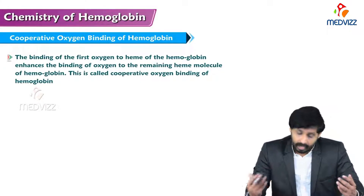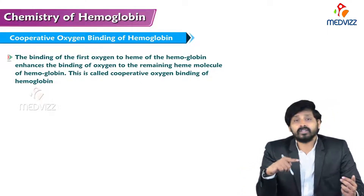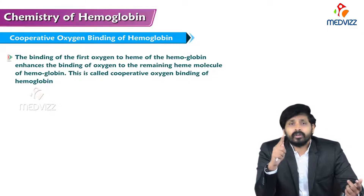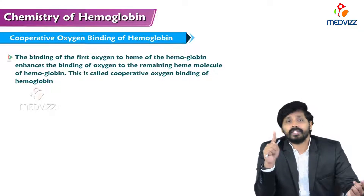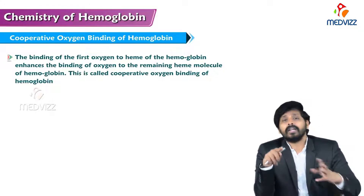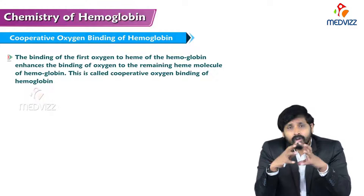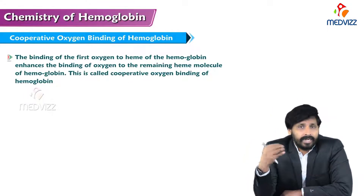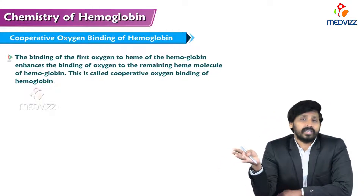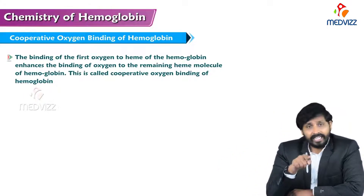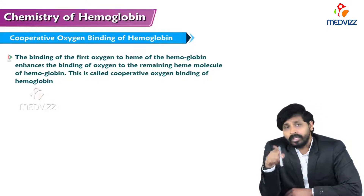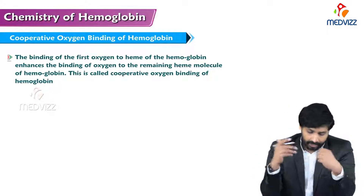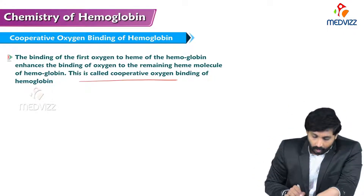What is cooperative oxygen binding? The binding of the first oxygen to heme — as discussed in previous videos, the first oxygen molecule binds to the alpha chain of hemoglobin, widening the pockets of hemoglobin, which facilitates further oxygen binding to the other globin chains. The binding of the first oxygen to heme enhances binding of oxygen to the remaining heme molecules — this is called cooperative oxygen binding.